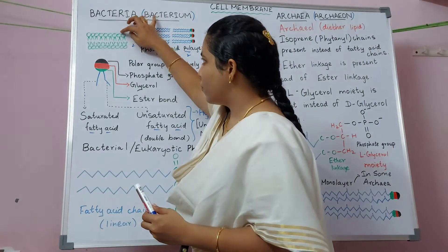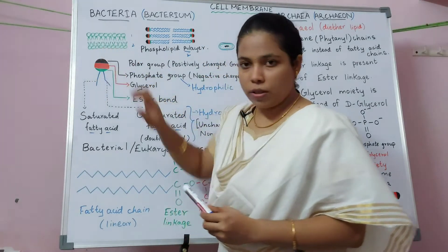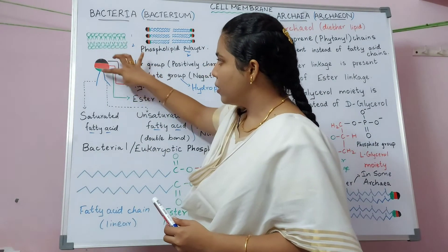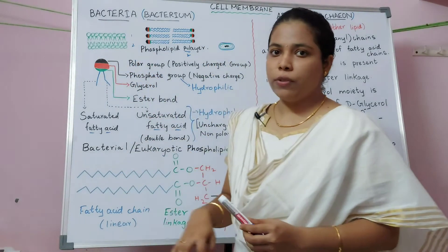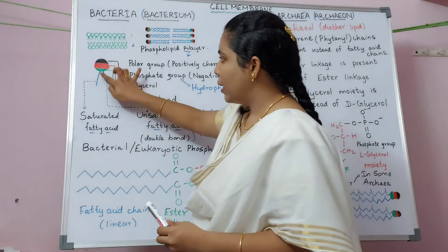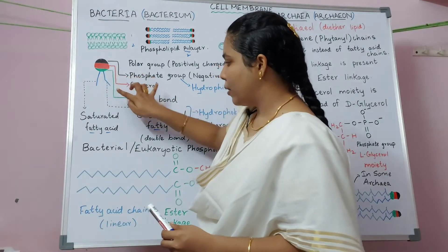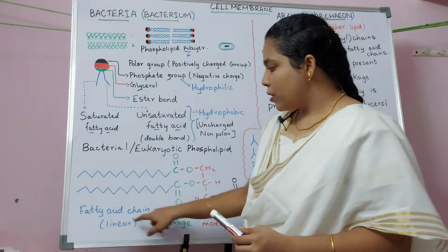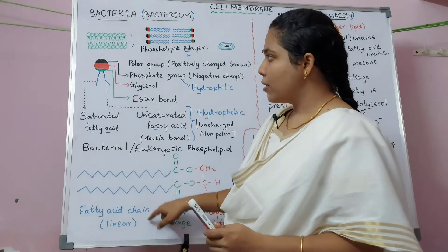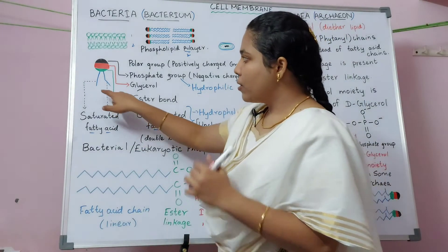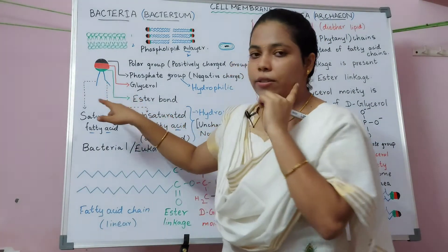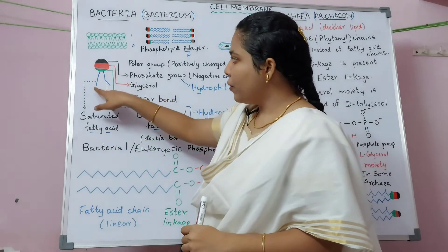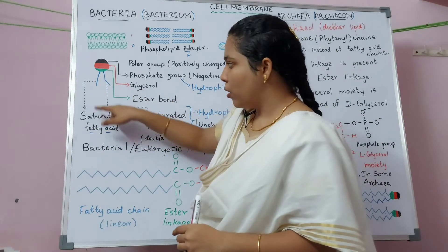A single phospholipid can be drawn with a head portion and a tail portion. This tail portion is nothing but a fatty acid chain. There are two fatty acid chains: the first chain, which is straight, is called a saturated fatty acid.